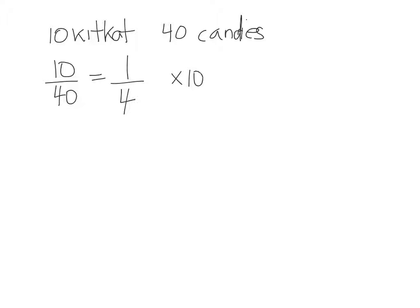We said 10 KitKat in a beaker containing 40 candies. So 10 out of 40 is the same thing as 1 out of 4. If you multiply that by 100%, you get the percentage. What's 1 quarter as a percent? 25%. So it's 25% KitKat.